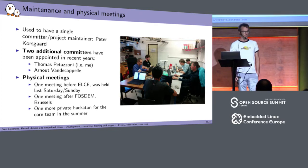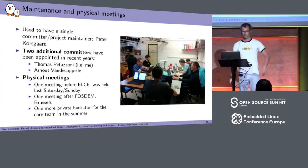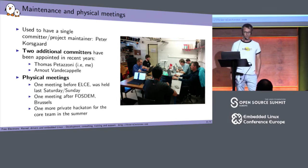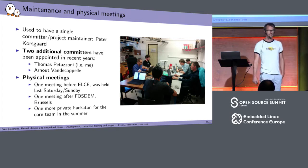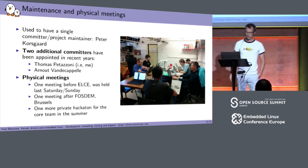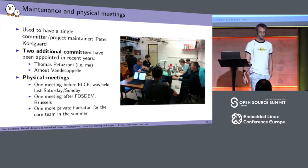In terms of maintenance, there have been a few changes over the last years. We used to have a single committer acting as project maintainer — that's Peter. Because of the increase in contributors and contributions, we added two other committers: first me, then Arnaud joined. We also now have physical meetings held about three times a year — we had one just last weekend before this conference, one after FOSDEM, and a private hackathon between core developers in the summer. So that helps make Buildroot move forward.